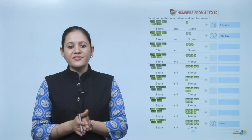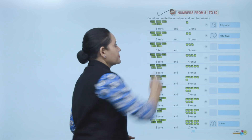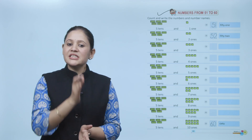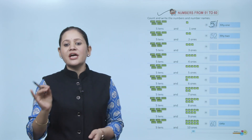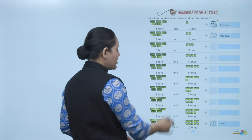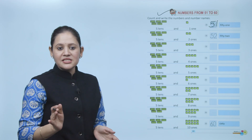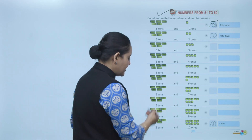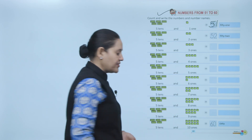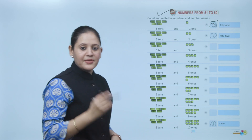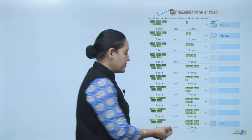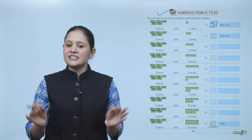Next, numbers from 51 to 60. Count and write the numbers and number names. 51 means 50 plus 1 — 5 tens and 1 one — that makes number 51. F-I-F-T-Y-O-N-E. Like this you can write numbers up to 59. Then comes 60: 6-0. That means 5 tens plus 10 ones — 50 plus 10 makes 60. S-I-X-T-Y.